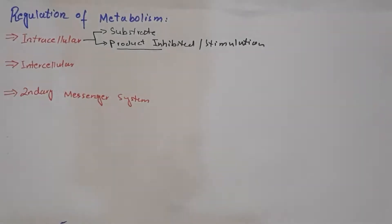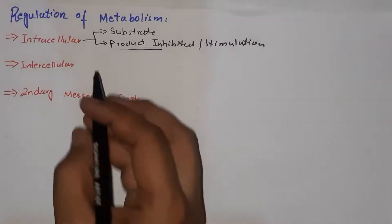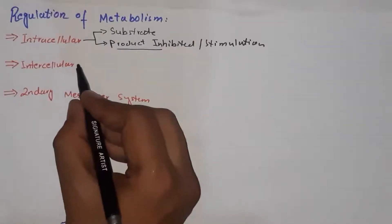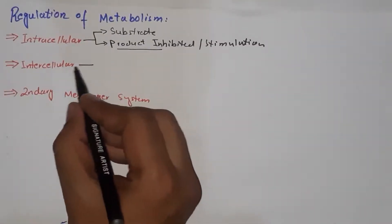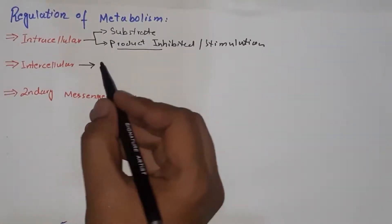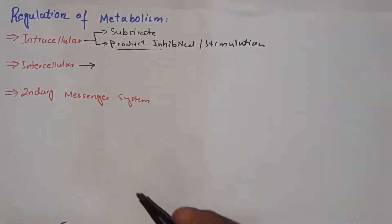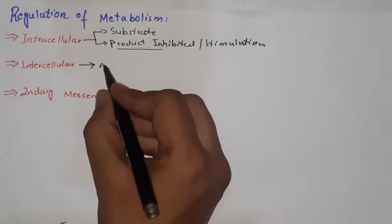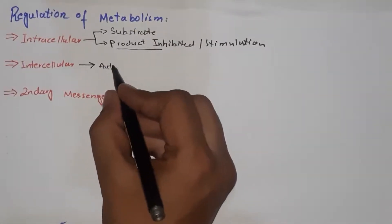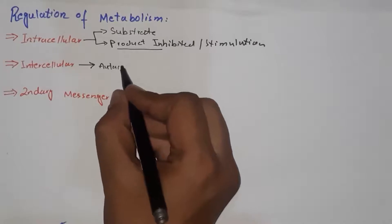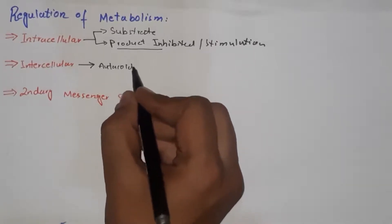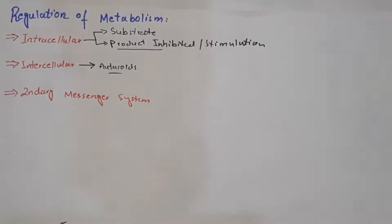Similarly, metabolic reactions are also regulated by the influence of surrounding cells, and this is intercellular regulation. For example, surrounding cells may release different autocoids that influence their neighboring cells and alter their different metabolic processes.